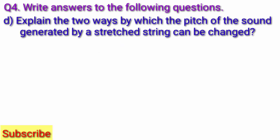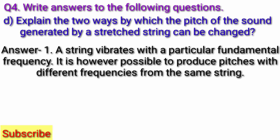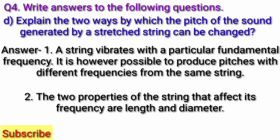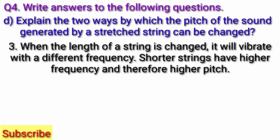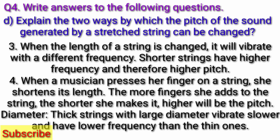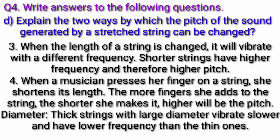Question D: Explain the two ways by which the pitch of the sound generated by a stretched string can be changed. Answer: A string vibrates with a particular fundamental frequency. It is however possible to produce pitches with different frequencies from the same string. The two properties of the string that affect its frequency are length and diameter. When the length of a string is changed, it will vibrate with a different frequency. Shorter strings have higher frequency and therefore higher pitch. When a musician presses her finger on a string, she shortens its length. The more fingers she adds, the shorter she makes it, and the higher will be the pitch. Regarding diameter: thick strings with large diameter vibrate lower and have lower frequency than thin ones.